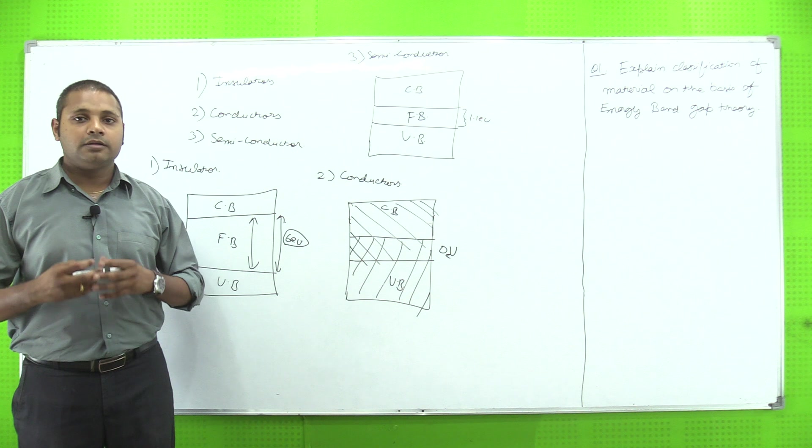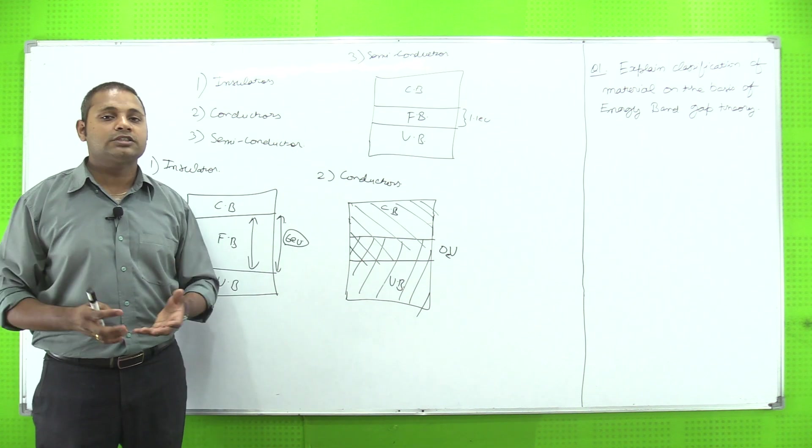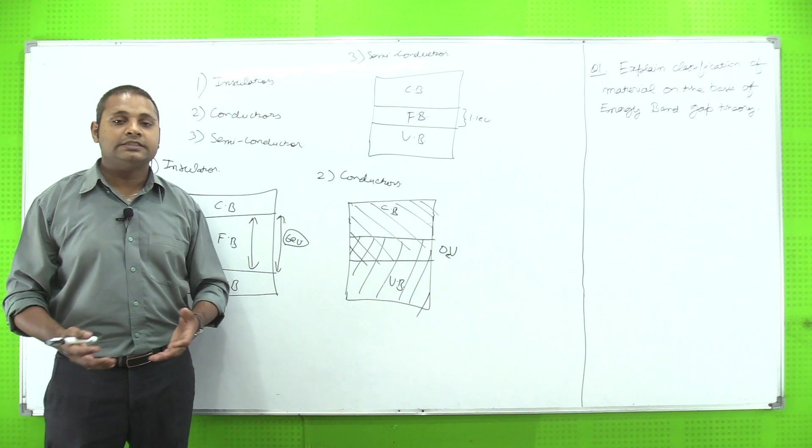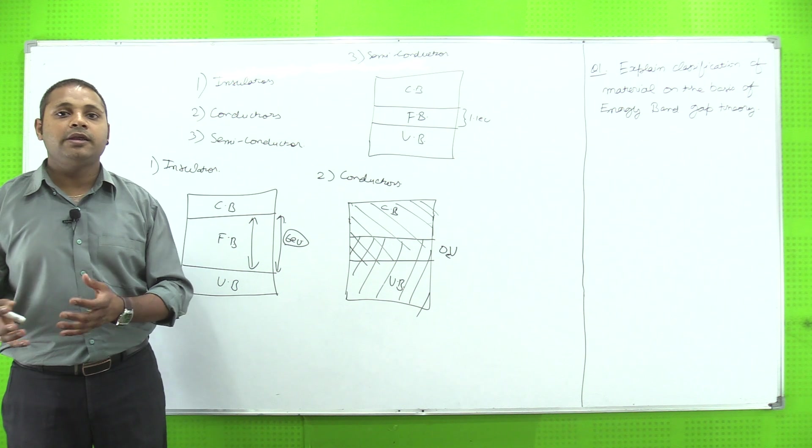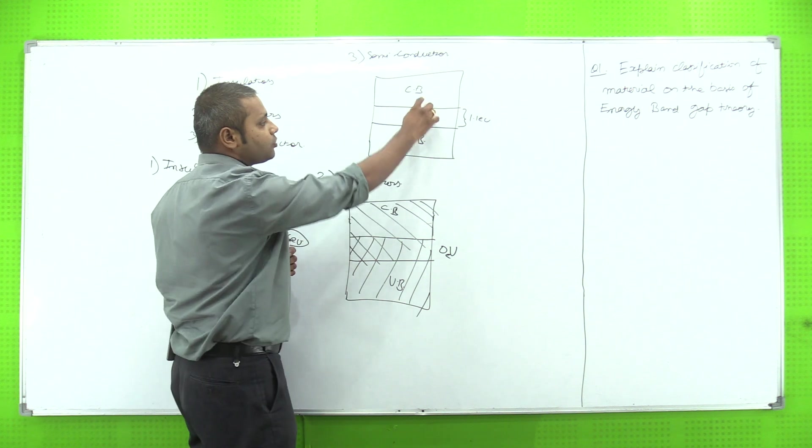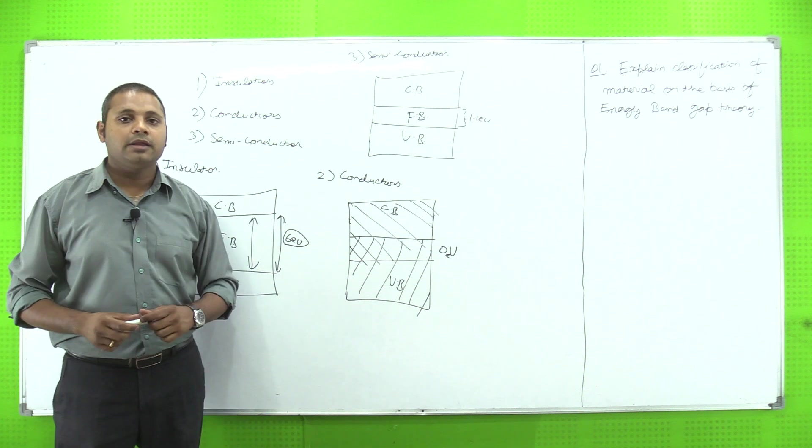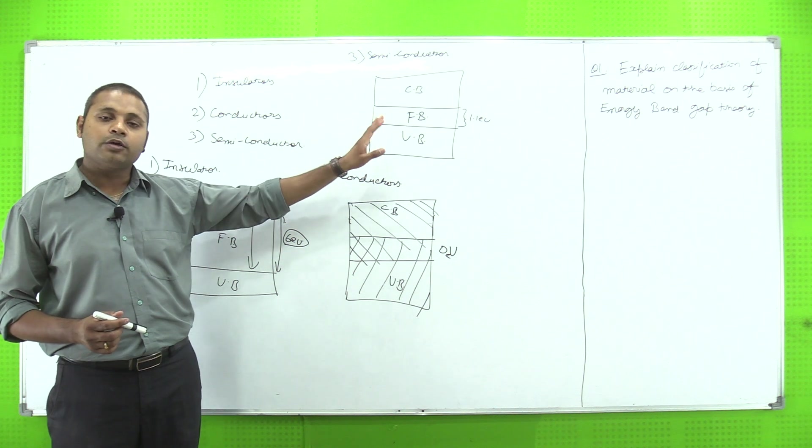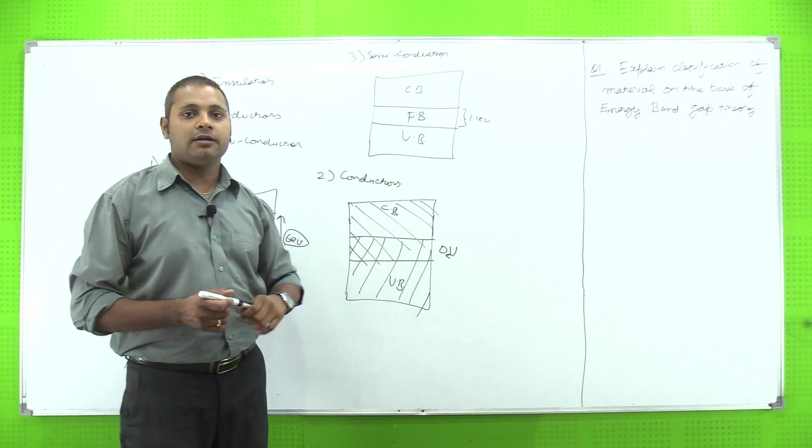It means this forbidden gap can be reduced by using doping process. Semiconductor hi mostly majority hai jo hum electronics mein read karte hai. Electronics ka matlab semiconductor. Semiconductor devices jaisa resistor hai, ICs hai, MOSFET hai, BJT hai - all these are semiconductor material. Yahaan par agar hum conduction aur valence band dekhen, conduction aur valence band ke beech mein 1.1 electron volt range ka mera ek forbidden gap hoga. Yeh forbidden gap aisa hai ki main agar ismein external energy provide karunga, ya doping karunga, ya external agent add karunga, this gets vanished and starts conducting.